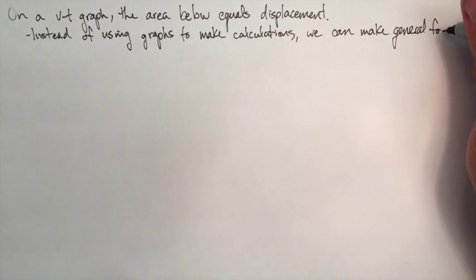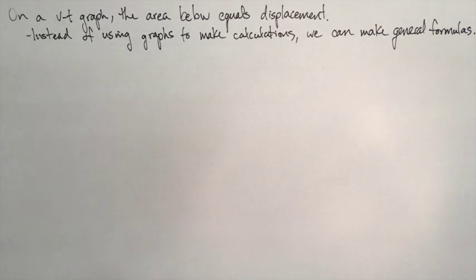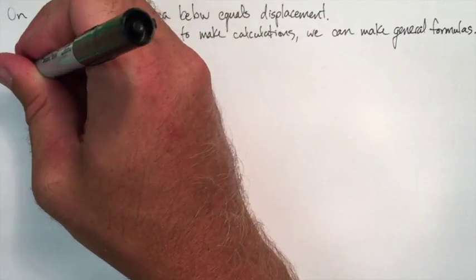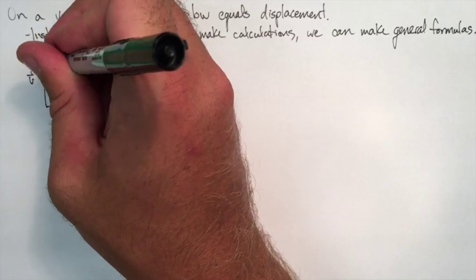So we're going to use an arbitrary graph here, a VT graph, where there's an increasing velocity over time. So we'll start from some lower velocity and go to some higher velocity, V1 and V2.